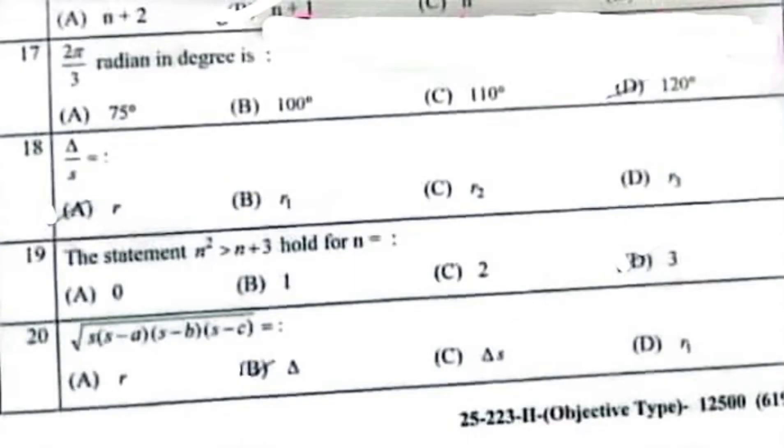The total number of terms in the expansion of (a plus x) to the power n is n plus 1. The answer is on page number 270. 2π over 3 radians in degrees is 120 degrees. Delta over s equals r, this formula is on page number 379. The statement n squared greater than n plus 3 holds for n equal to 3.